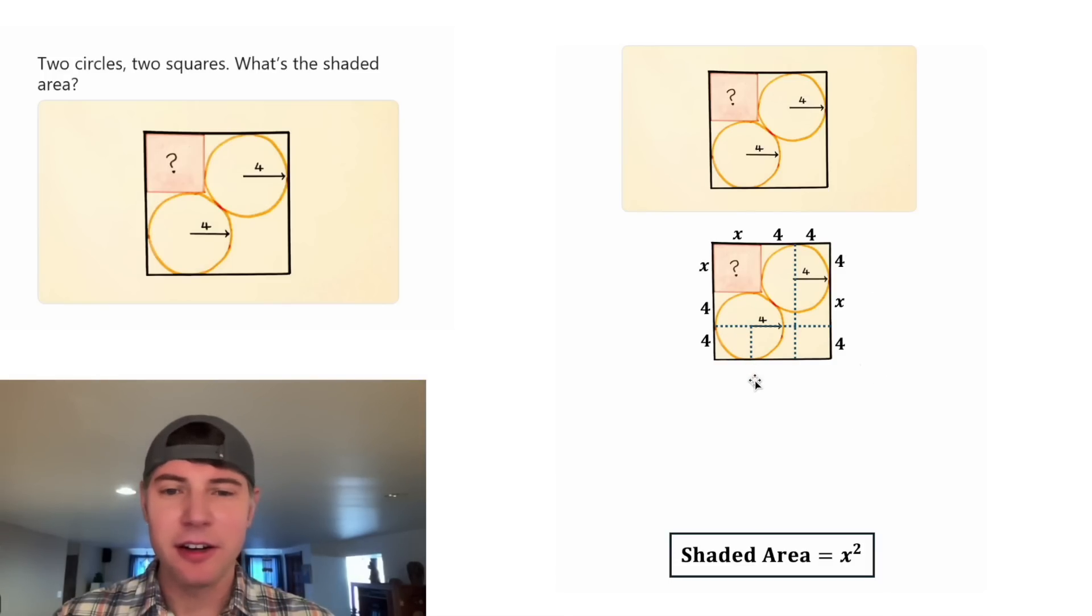And then on bottom, let's draw this down from the center. This piece would be four, and this piece would be four, and that leaves X for that piece. So now we can verify our square. Every side is X plus four plus four.